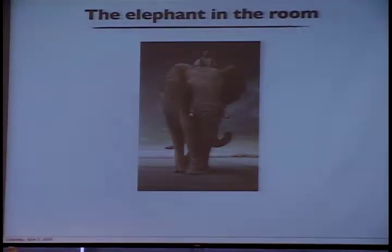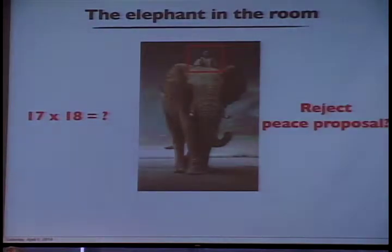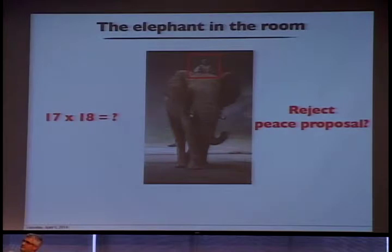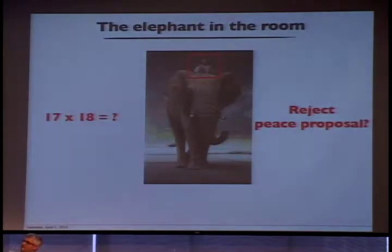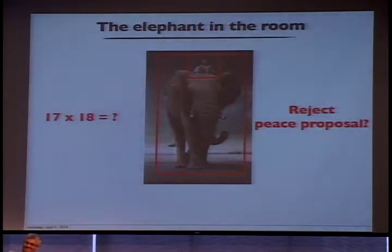Here's an example of a cognitive process we can introspect about: if I ask you to multiply 17 by 18 in your head and then ask how you did that, you can tell me — I multiplied 7 and 8, I carried the 5. That's done by the rider. But if I ask you 'why did you reject that peace proposal?' there are a lot of processes you could tell me some reasons for, but many of the reasons why people reject peace proposals are things going on in the elephant. We can develop behavioral measures based on performance. What I'm trying to do is develop measures based on neuroimaging, where you can actually look at what's going on in the entire brain and not just rely on self-report. Thank you very much.